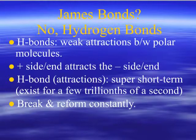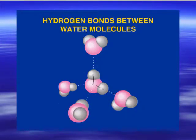Hydrogen bonds — not James bonds — are very weak attractions that form between polar molecules. The positive end is attracted to the negative end of other molecules. These hydrogen bonds, or hydrogen attractions, are super short-term; they exist for only a few trillionths of a second and are constantly breaking and reforming. Here's an example showing dots between water molecules — those dots represent the hydrogen bonds that form between the positive end of one water molecule and the negative end of another.